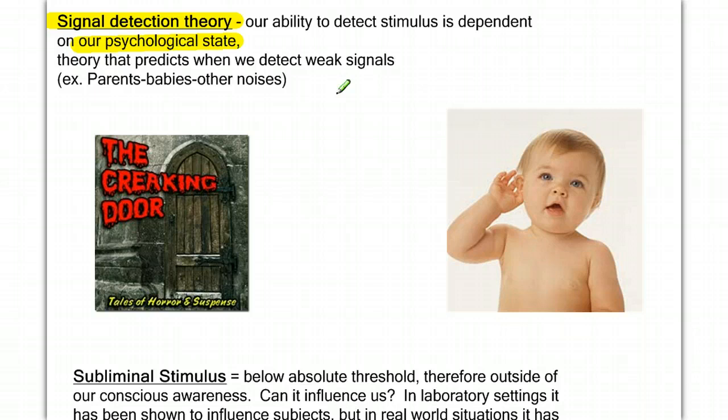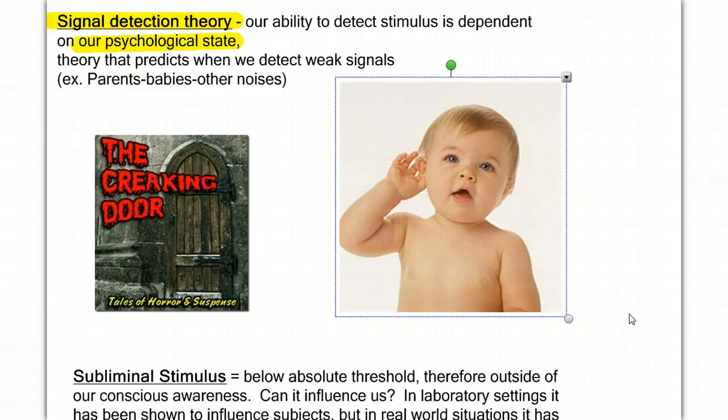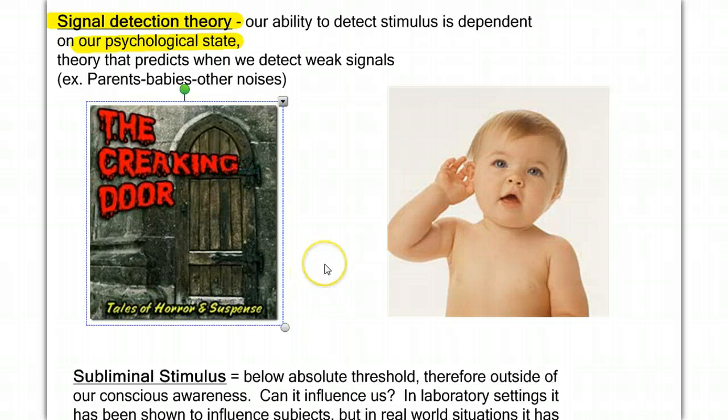This is a theory that predicts when we will detect weak signals. For example, parents who have a newborn baby are often very tired. They're getting very little sleep, and they might sleep right through their alarm clock. But you know what they won't sleep through? They won't sleep through the sound of their baby crying, even if it's in another room and very low in terms of audible, not being very audible. And think about when you're home alone at night just after seeing a spooky movie on TV, and every little noise in the house you seem to hear, whereas before you would have ignored those noises. Our psychological state can kind of make our sensory system more sensitive, and that's called the signal detection theory. We'll give some more examples in class about how expectation affects our ability to recognize stimulus.